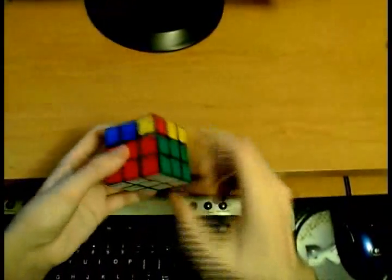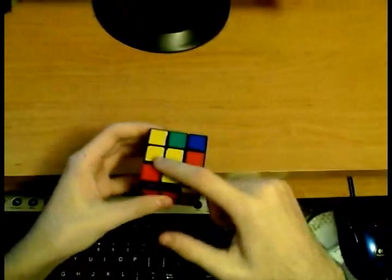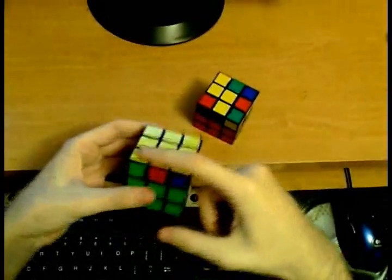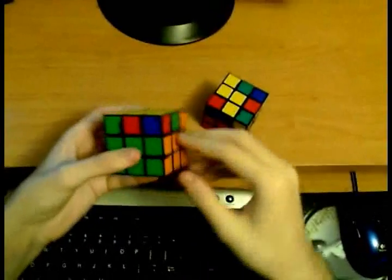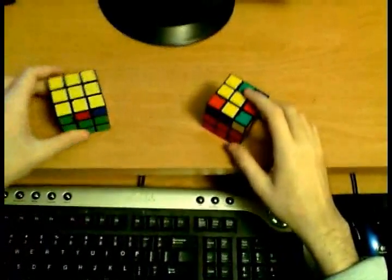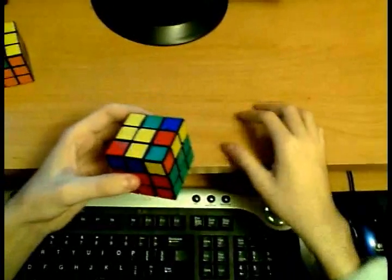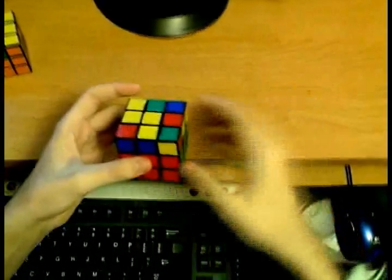The two-look OLL simply orients the last layer right after you finish your first two layers, so it makes the cube go from this to this, where you can see that all the pieces on the last layer are correctly oriented but their positions are still scrambled. That's fixed using the permutation step in the CFOP method, which is the last step anyway.